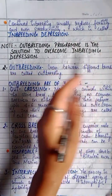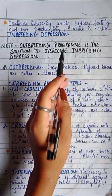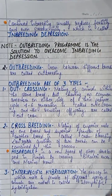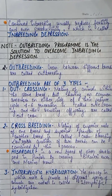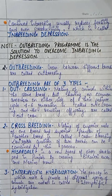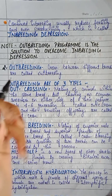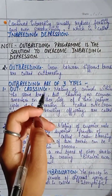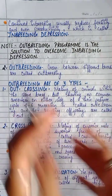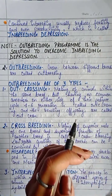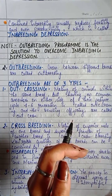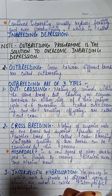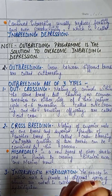Note: outbreeding is the solution to overcome inbreeding depression. Outbreeding is the cross between different breeds. In inbreeding we use the same breed; in outbreeding we take different breeds and cross between them.